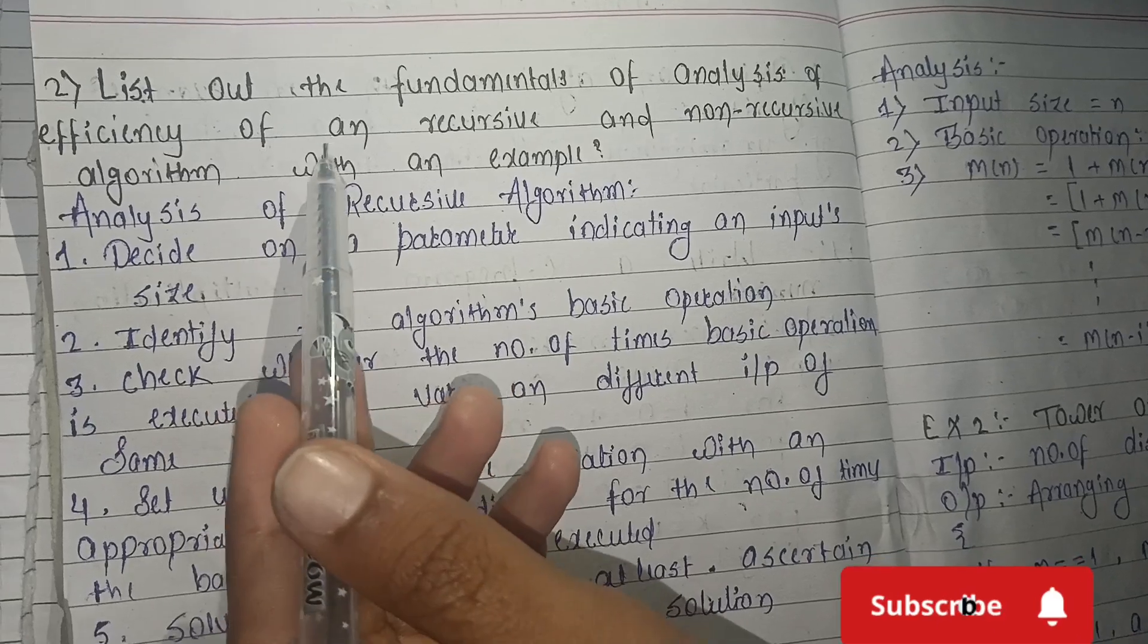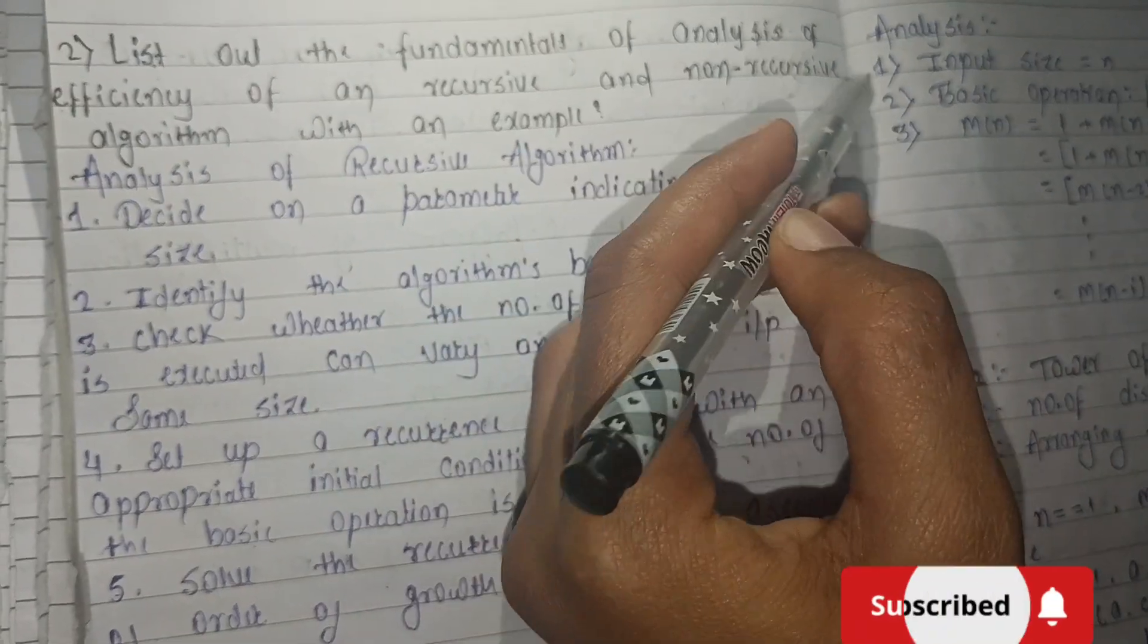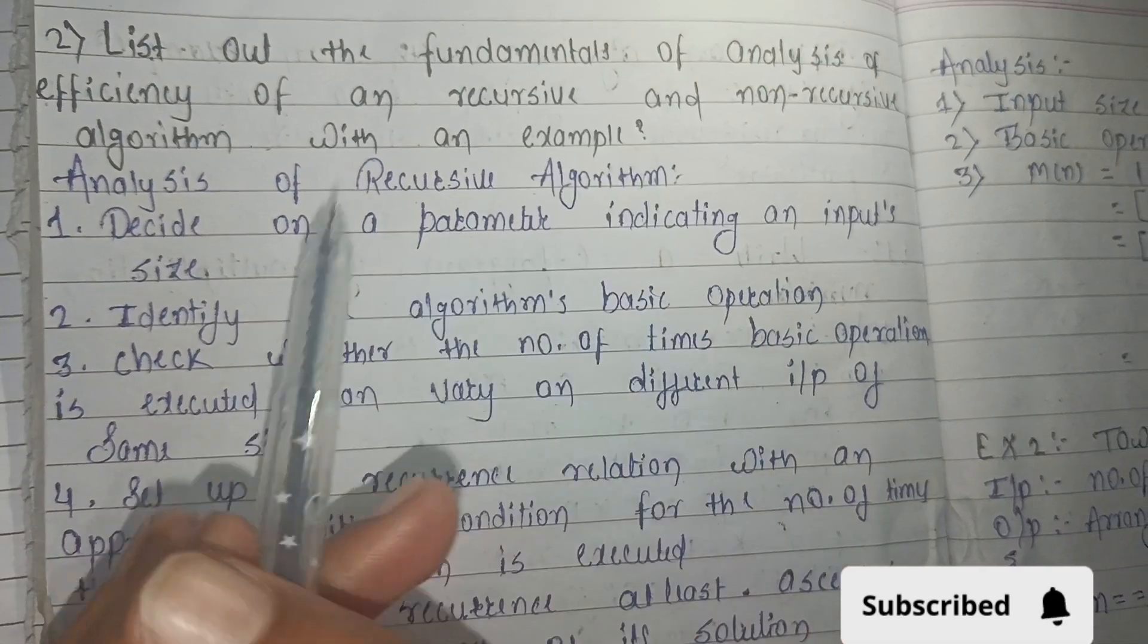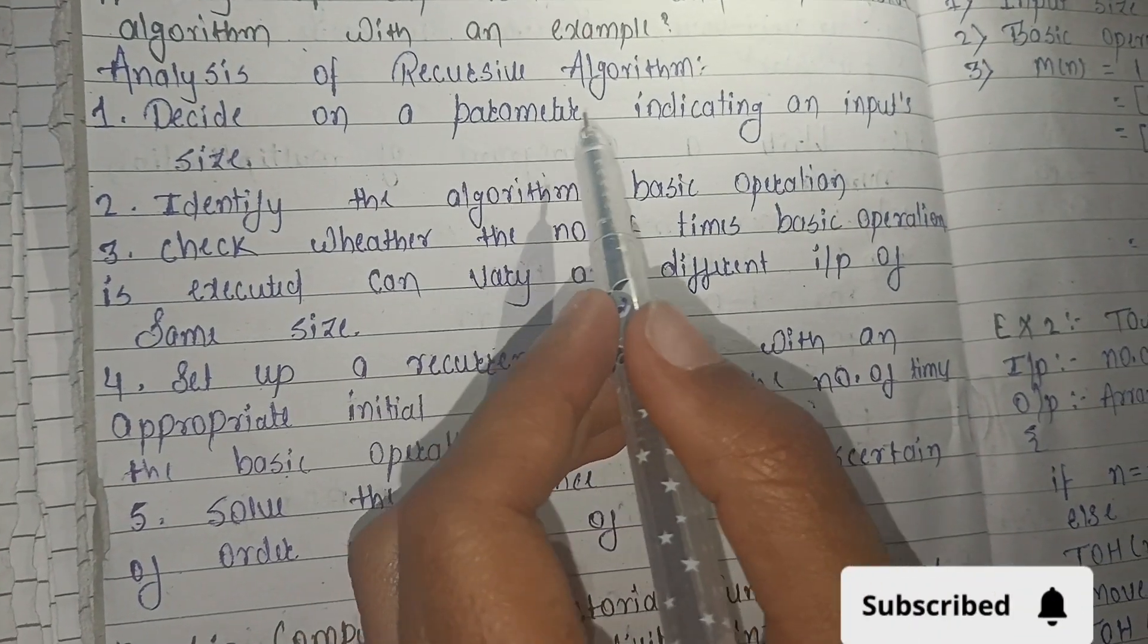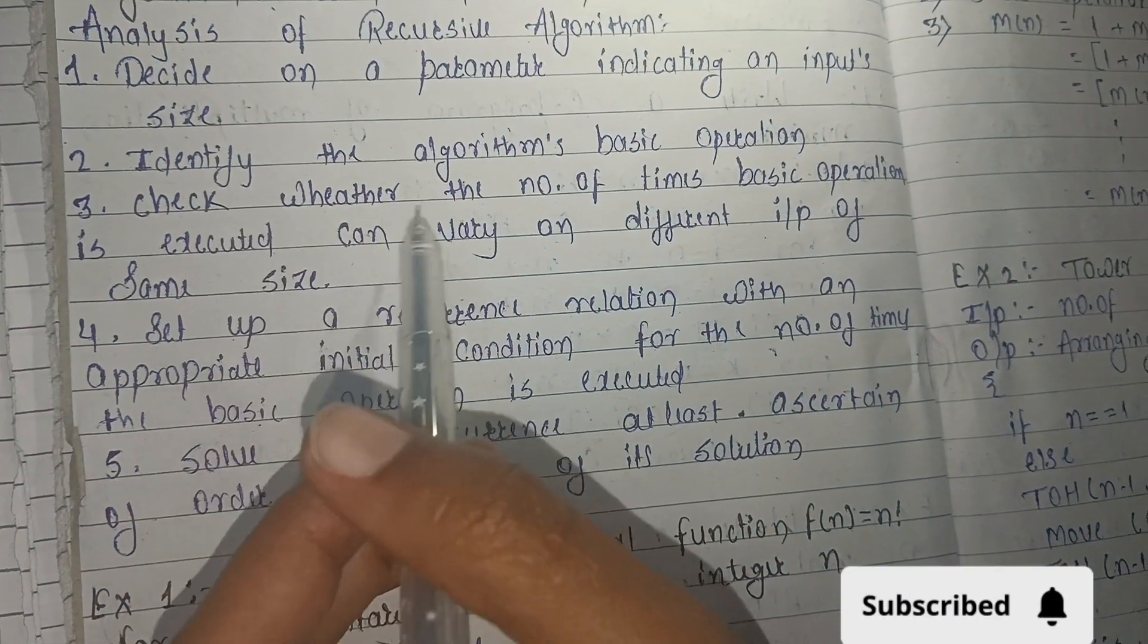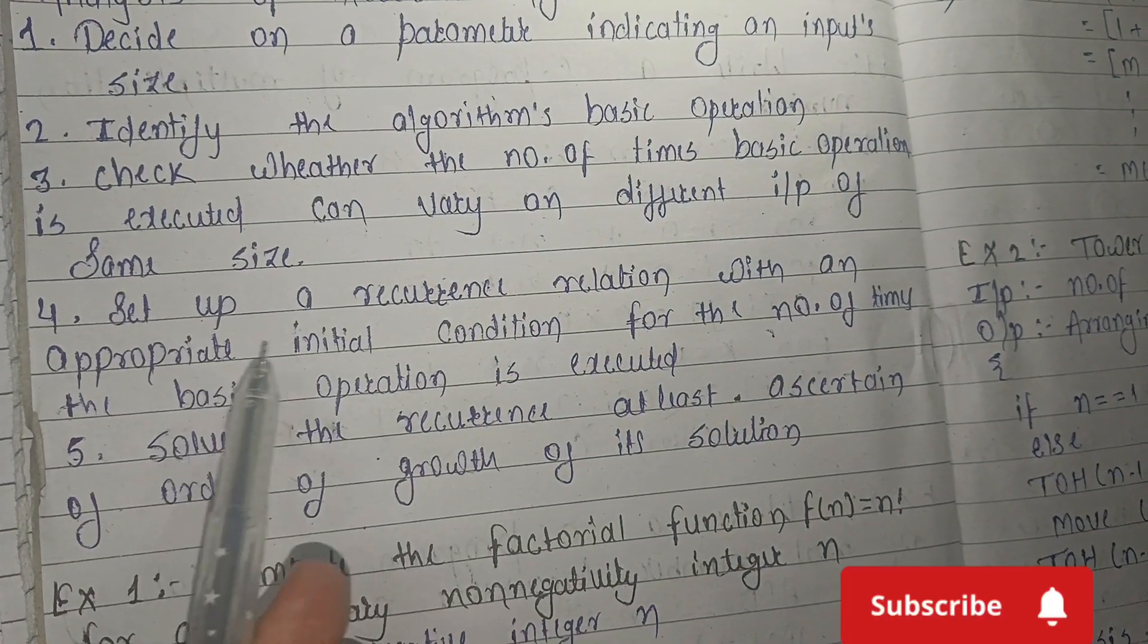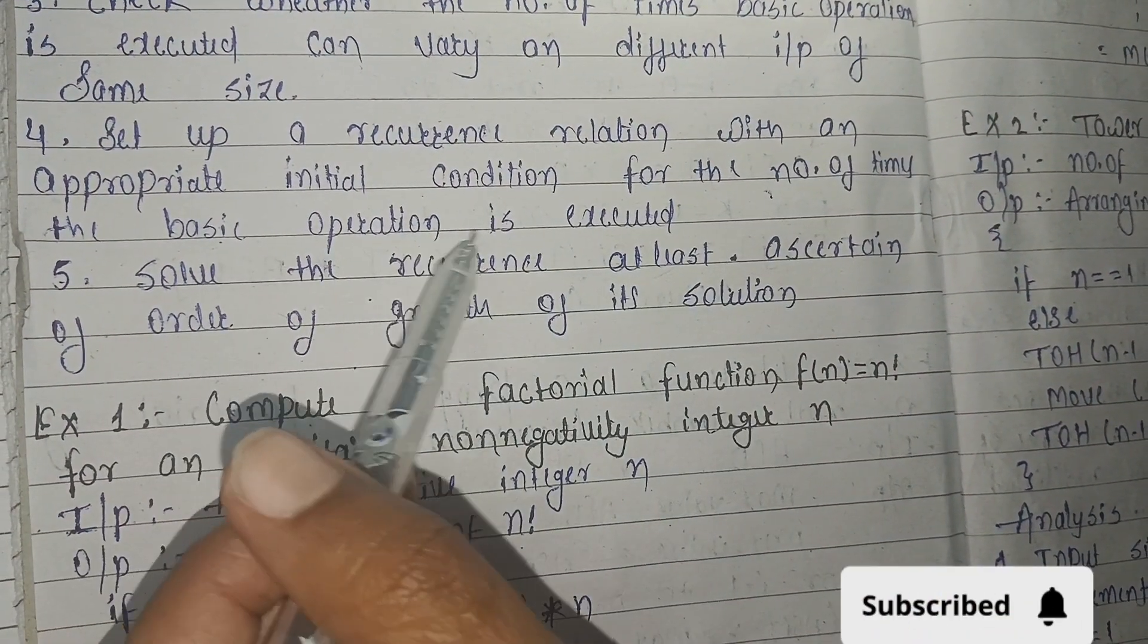Second question is: list out the fundamentals of analysis of efficiency of a recursive and non-recursive algorithm with an example. Analysis of recursive algorithm: 1. Decide on a parameter indicating input size. 2. Identify the algorithm's basic operation. 3. Check whether the number of times basic operation is executed can vary on different inputs of same size. 4. Set up a recurrence relation with appropriate initial condition for the number of times the basic operation is executed.